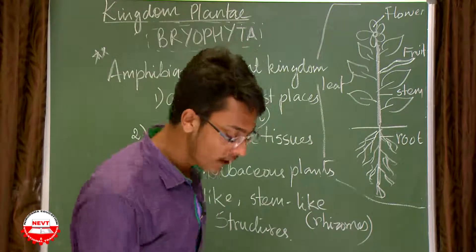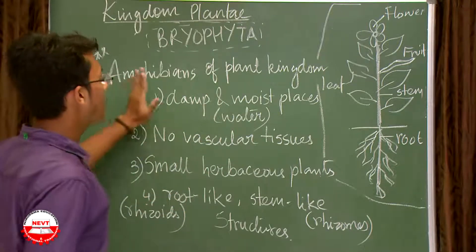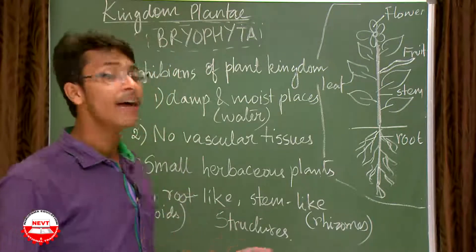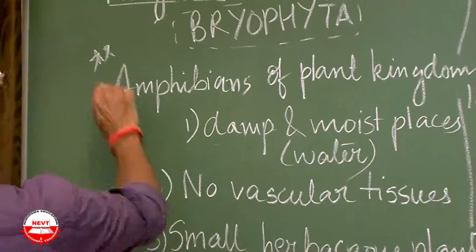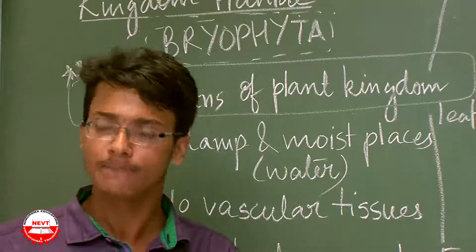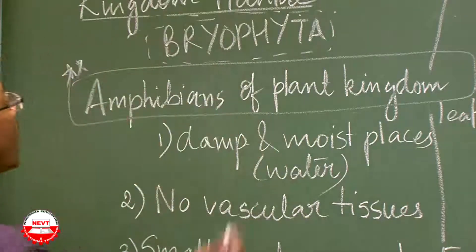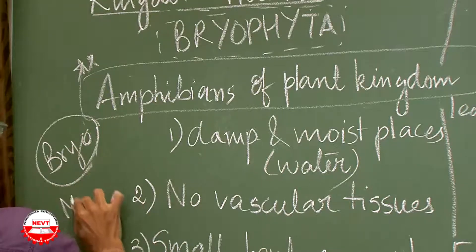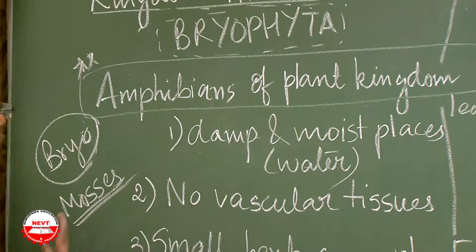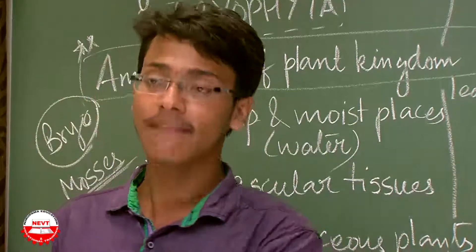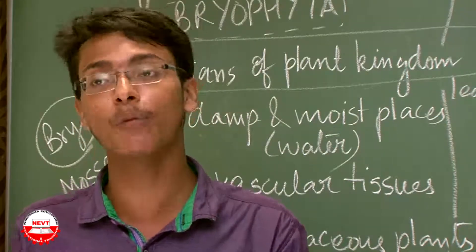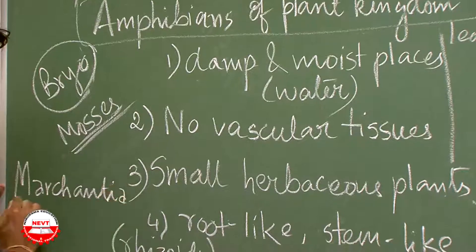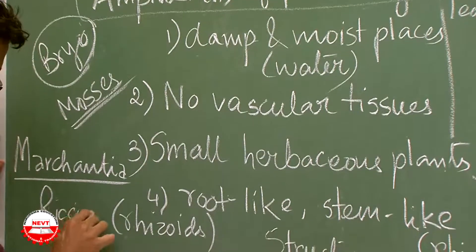To conclude, the four important characteristics of Bryophyta are: they are found in damp and moist places; they have no vascular tissues; they are small herbaceous plants; and they have root-like and stem-like structures. They are called the amphibians of the plant kingdom. The word 'bryo' means mosses — small herbaceous plants that cover the surface of bricks when exposed to continuous water — and 'phyta' means plants. Examples of bryophytes include Marchantia, Riccia, and Funaria.